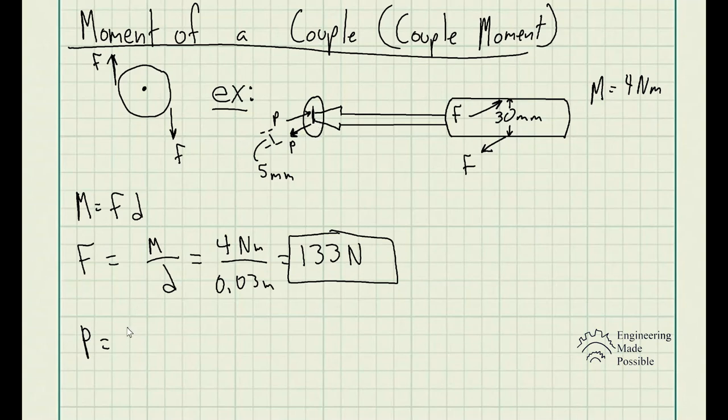So in this case, moment divided by D. The distance between the forces P here is 5 millimeters. So 4 newton meters divided by 0.005 meters. Convert it to meters to cancel out the units and just be left with newtons. And the P is 800 newtons.